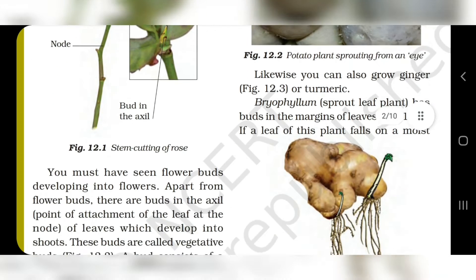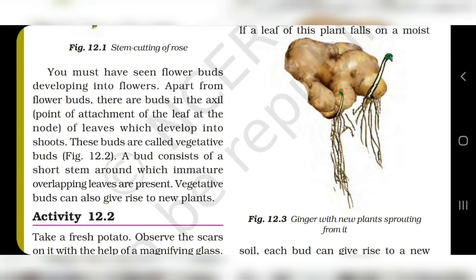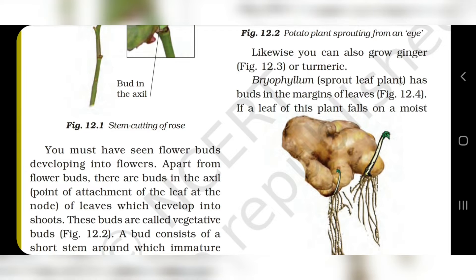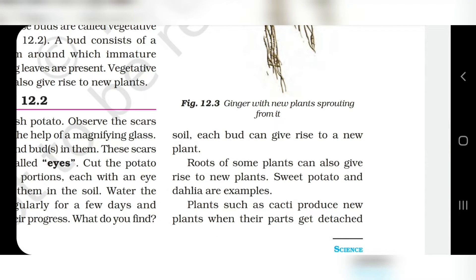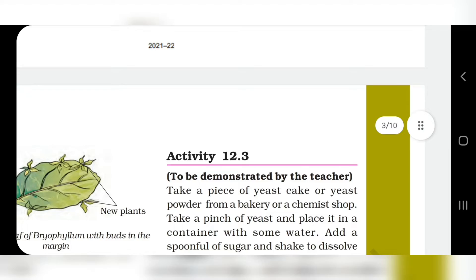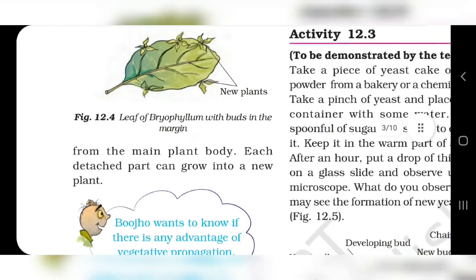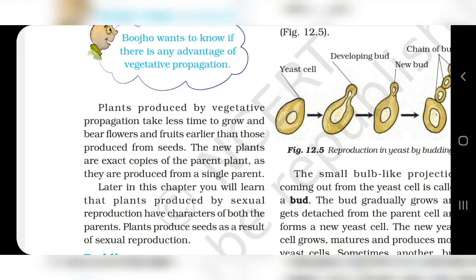Now, buds. Vegetative buds consist of short stems around which immature or overlapping leaves are present. Vegetative buds can grow and give rise to a new plant. For example, potato, turmeric and ginger grow from buds. Bryophyllum is a plant that has buds in the margin of the leaves. As you can see in figure 12.14, when the leaf of bryophyllum falls down to the soil, it grows new plants.